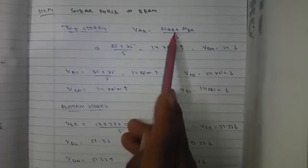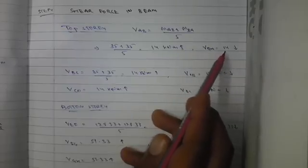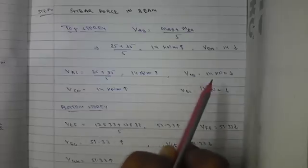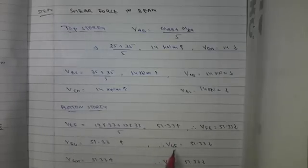The next step is to find the shear forces in the beams. For the top story, the moment at A due to B plus the moment at B due to A, divided by the span length of 5 m, gives V_AB = V_BA = 14 kilonewtons. Similarly V_BC and V_CD are also 14 kilonewtons. For the bottom story, adding both moment values and dividing by 5 gives V_EF = V_FG = V_GH = 51.33 kilonewtons.